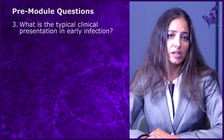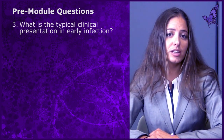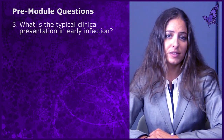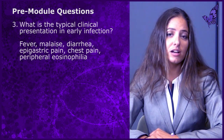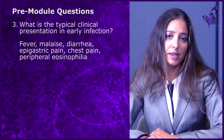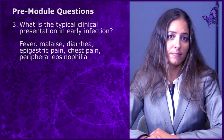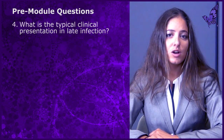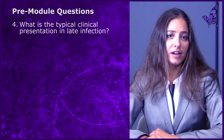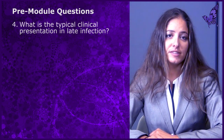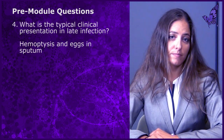Question number three: what is the typical clinical presentation in early infection? The answer includes fever, malaise, diarrhea, epigastric pain, chest pain, with peripheral eosinophilia. Question number four: what is the typical clinical presentation in late infection? This includes hemoptysis with eggs in sputum.